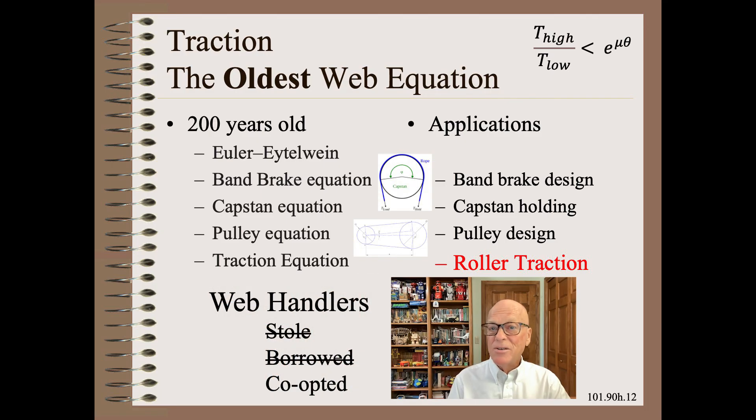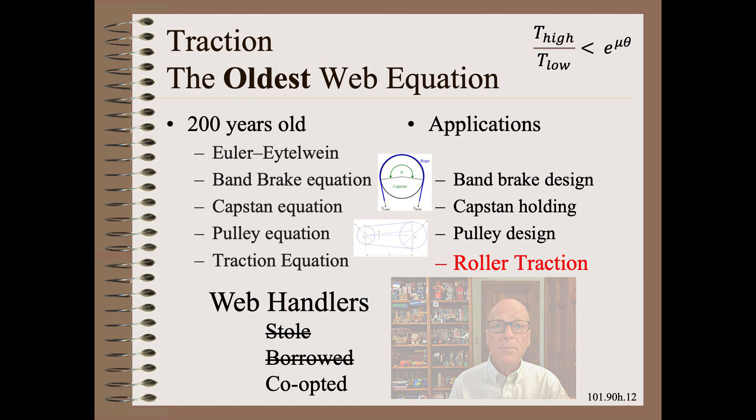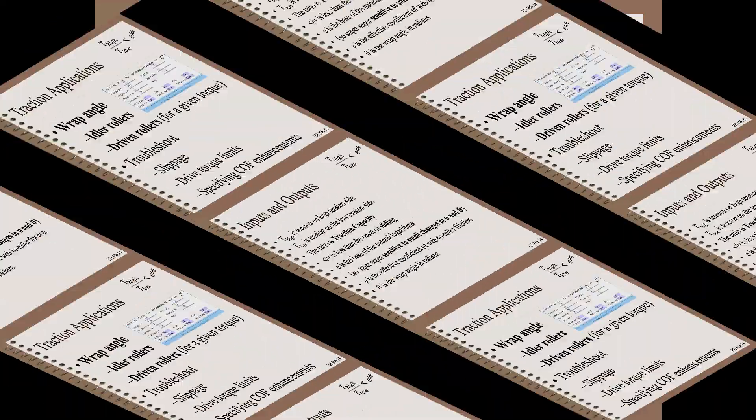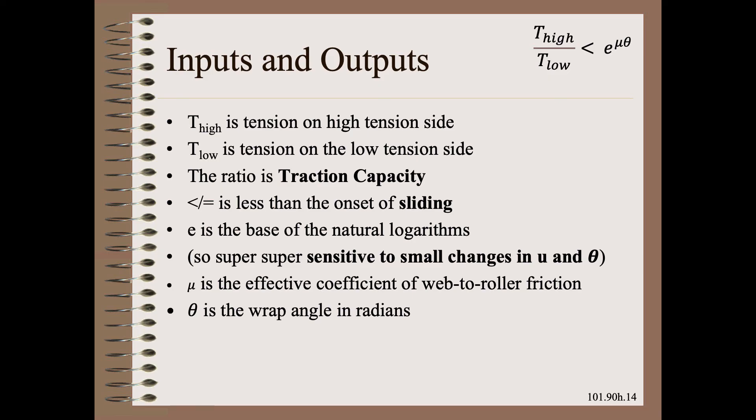This equation is a century old band break equation, which goes by many other names. We web handlers didn't steal it because no one owns it. We web handlers didn't borrow it because we're not giving it back. What we did was merely co-opted it for our own use. Applications for the traction calculation are many and include both machine design as well as troubleshooting. The inputs and outputs for the traction calculation are few and easily understood.